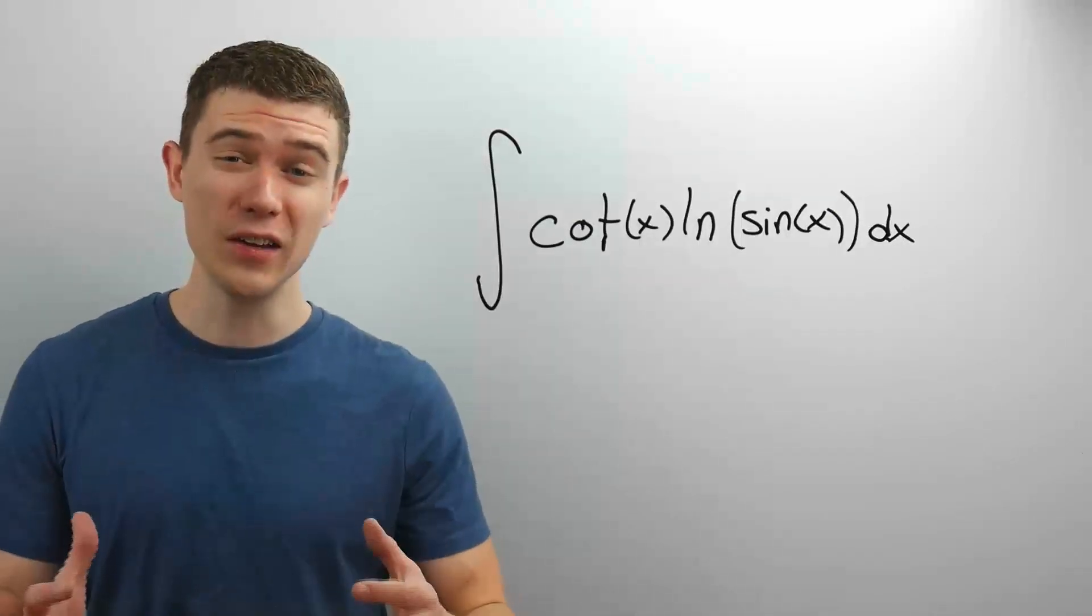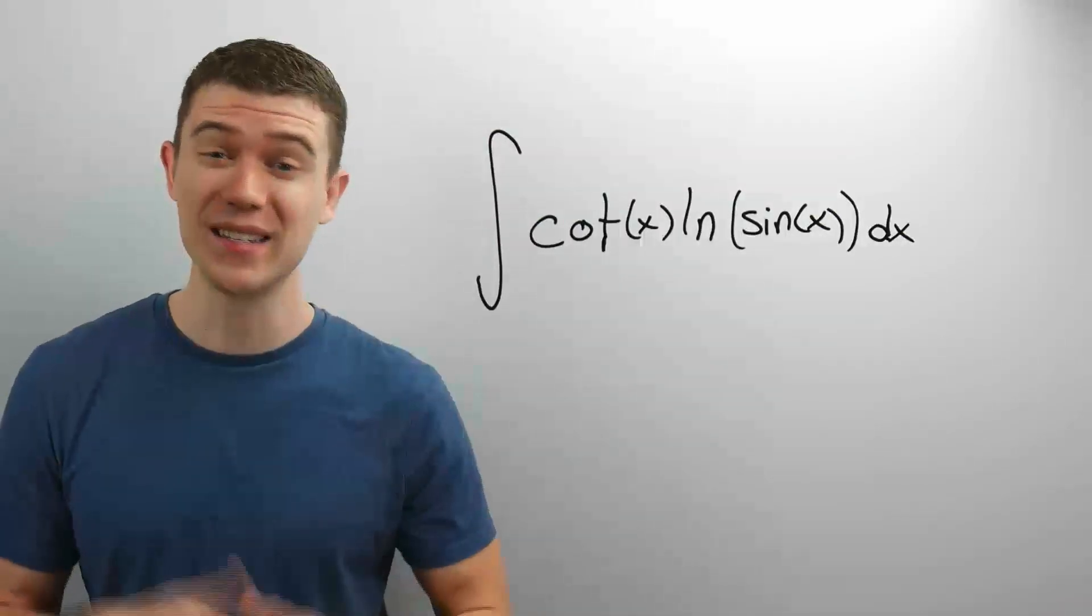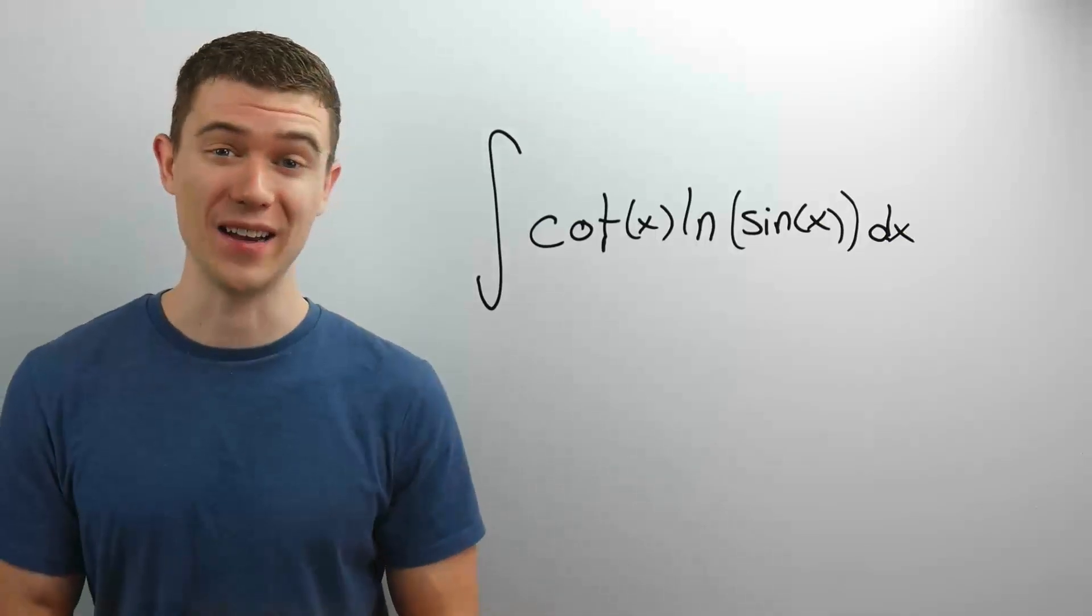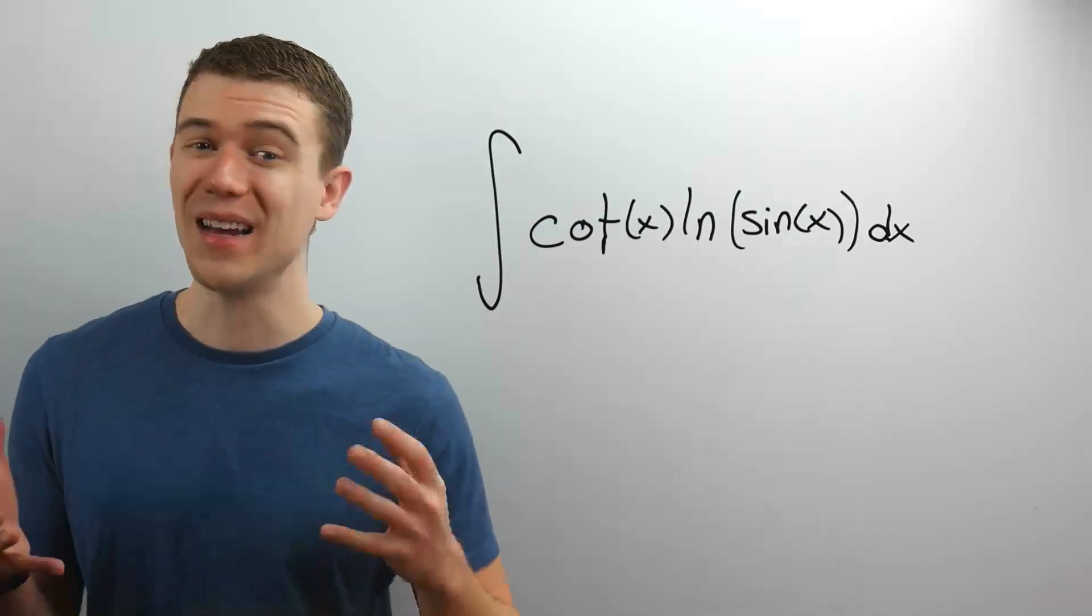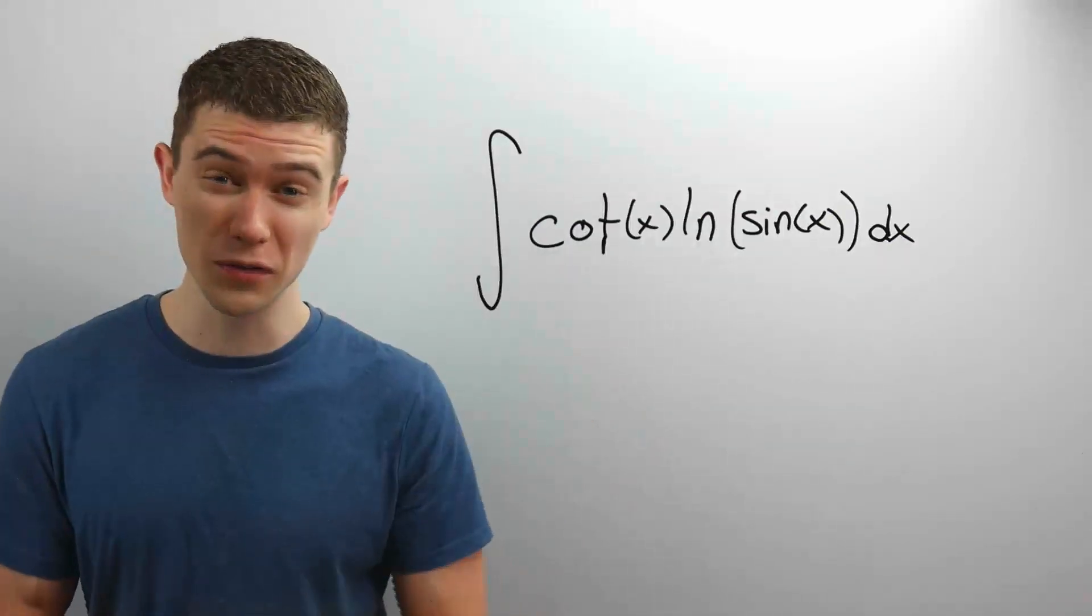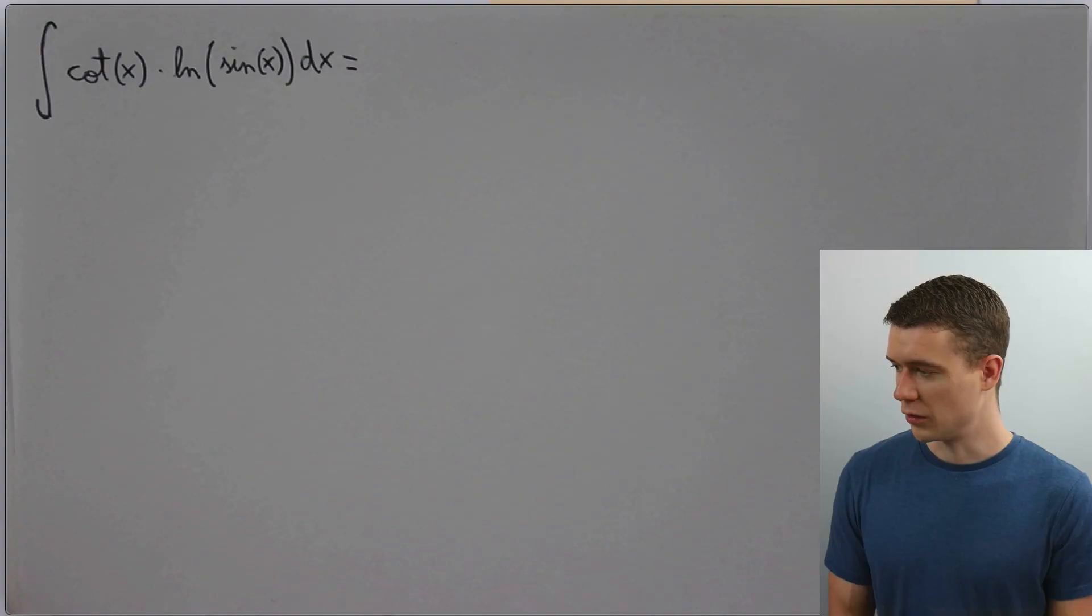Let's solve this integral, the integral of cotangent x natural log of sine of x. It's a double substitution, and to help me out, I'm going to ask integrals for you to show us how to do it. So here we go.